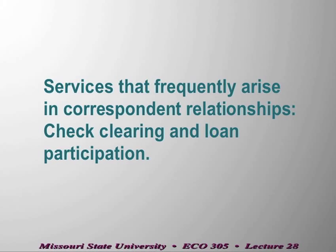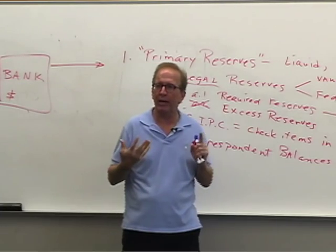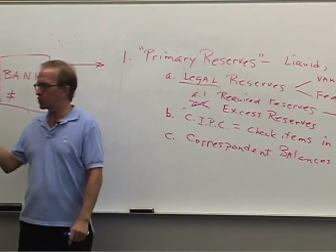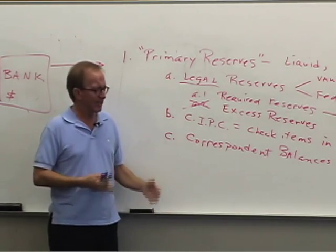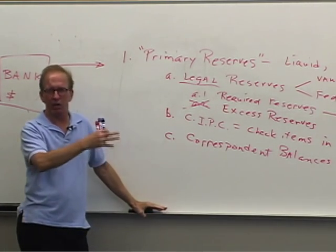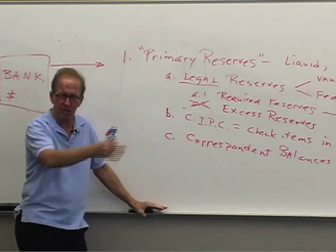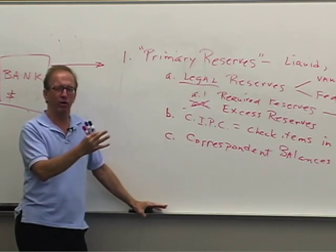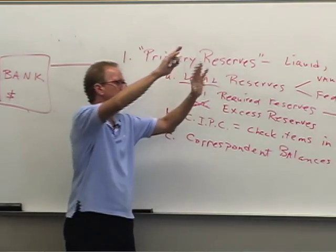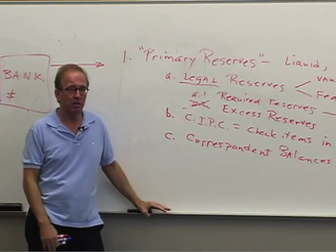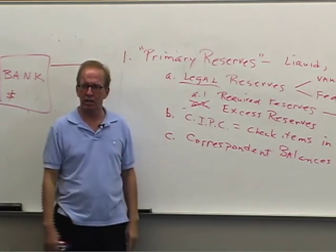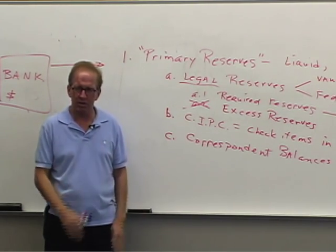Two examples of correspondent services: first, check clearing — handing checks over to a bigger bank that has the department, machinery, and computers to handle it, possibly at a lower fee than the Federal Reserve. Second, loan participation — if a small bank in a modest-sized town makes all its loans locally, it's not geographically diversified and might want to share in loans made by a bigger bank on the East Coast or in South America.